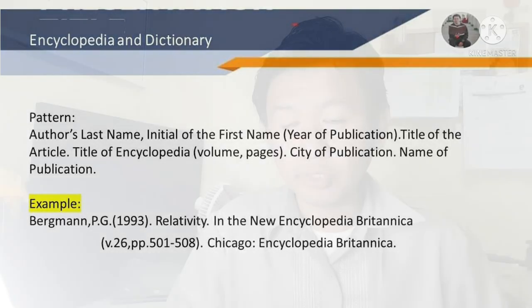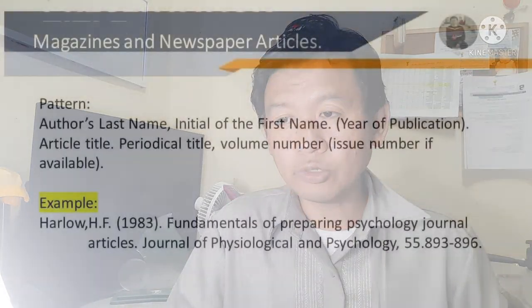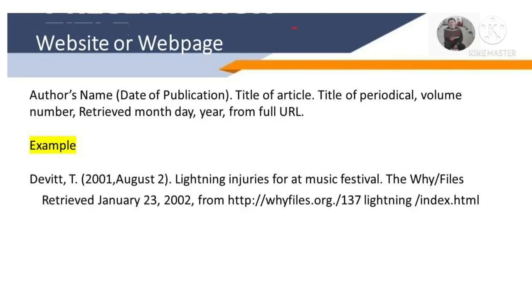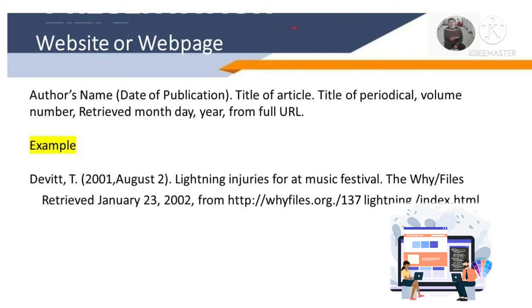For magazines and newspaper articles, the pattern is: author's last name, initial of the first name, year of publication, article title, periodical title, volume number, issue number if available. Example: Harlow, H. F. (1983). Fundamentals of preparing psychology journal articles. Journal of Physiological and Psychology.